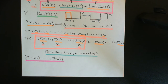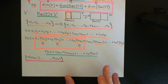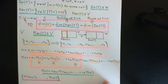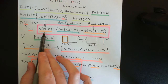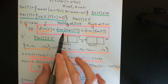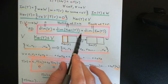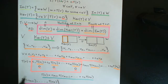Welcome back to this next video in which we are discussing the dimension formula. We've now seen what the dimension formula says: the dimension of the domain vector space is equal to the dimension of the kernel of a linear transformation plus the dimension of the image of a linear transformation.